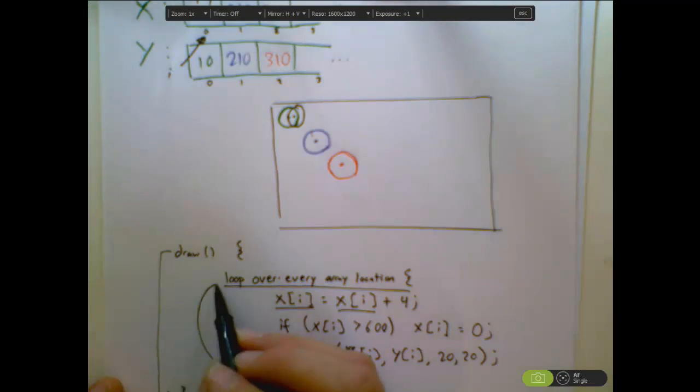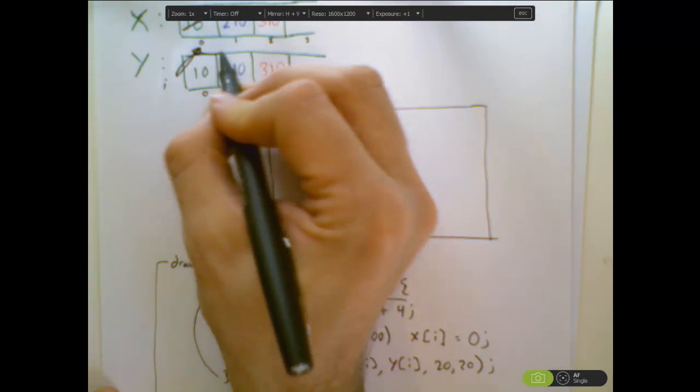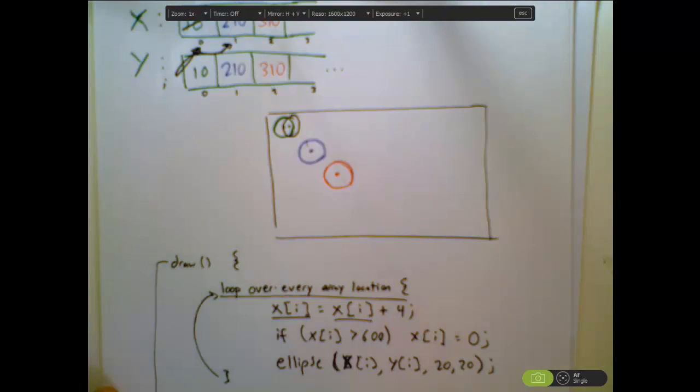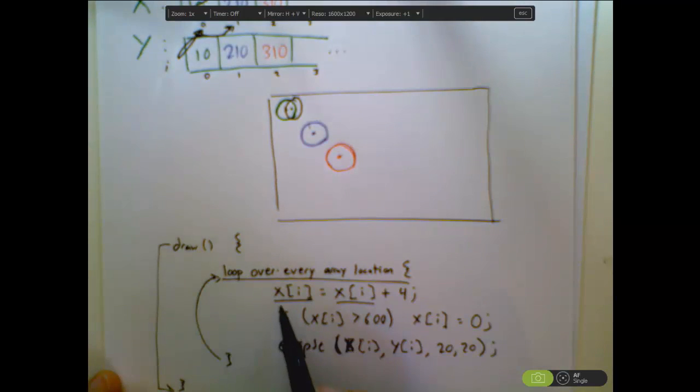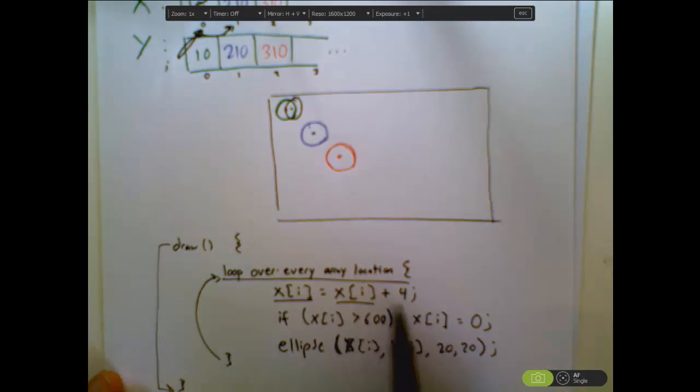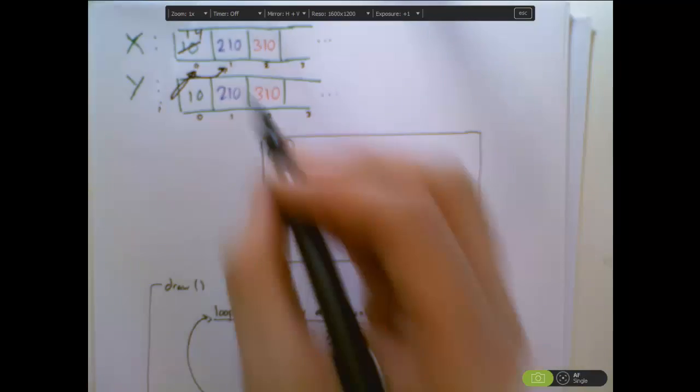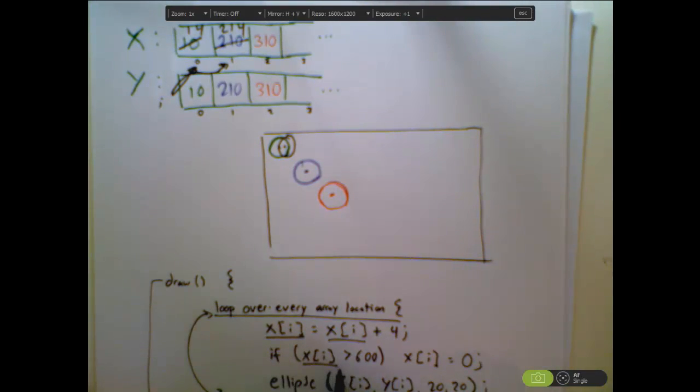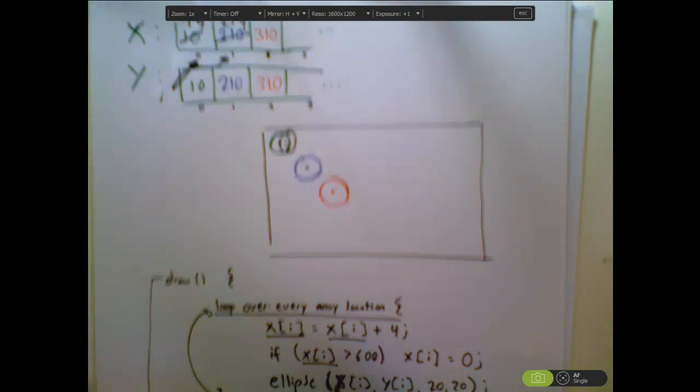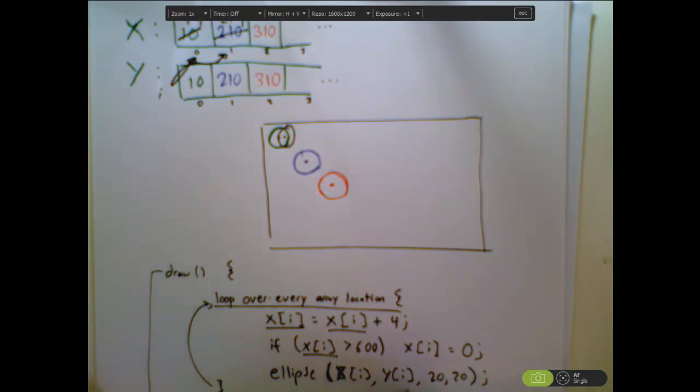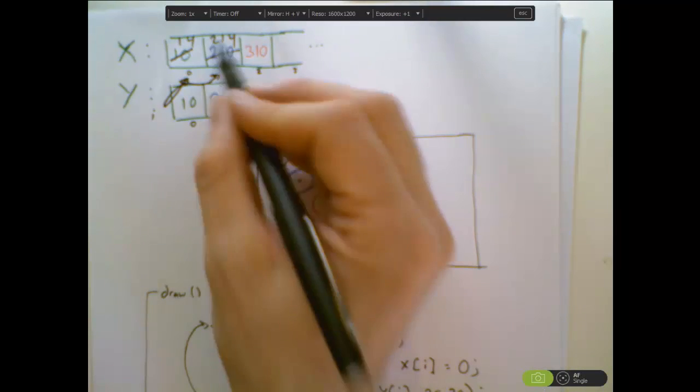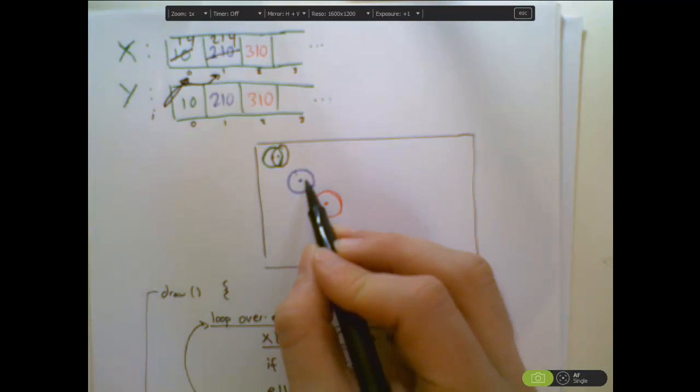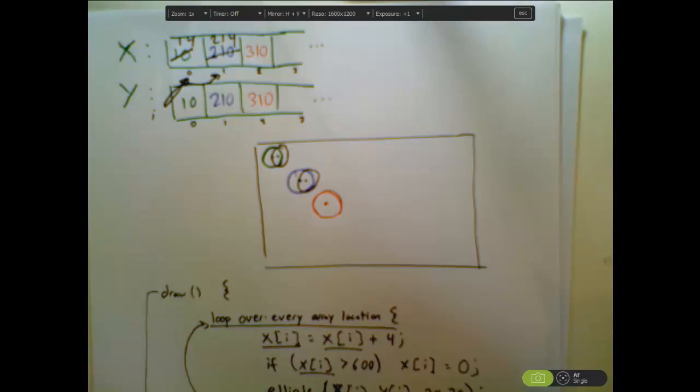But I'm not done with the draw loop because now I'm going to loop back up here and i is going to go up by one. So now i is going to point at the coordinate for the second ball. So now that i is one, I'm going to say take the x coordinate in location one and add four and save it back in the list. So 210 becomes 214. I check if that number is bigger than 600, it is not. So I draw an ellipse at 214, 210. So it takes these two numbers and draws an ellipse there, which is going to make it look like this one moved over a little bit.